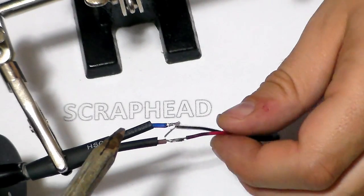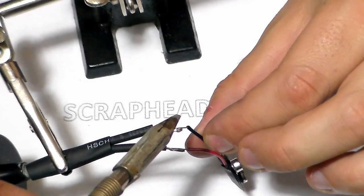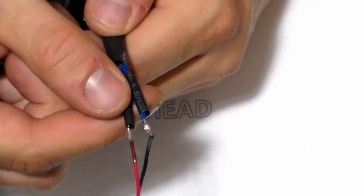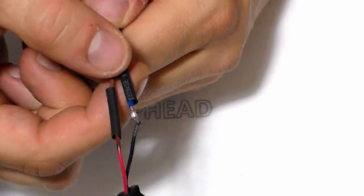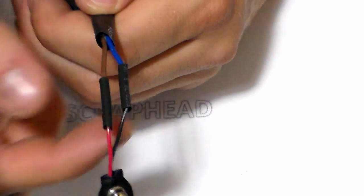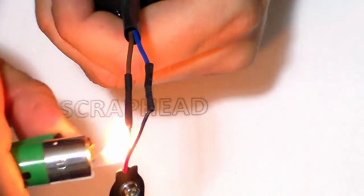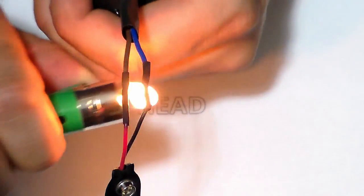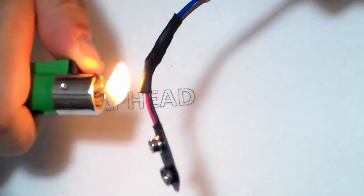And don't forget to put some shrinking tube on the cable before. Then put the shrinking tubes over the soldered connections and heat them up. Finally the big shrinking tube over the small ones and that's it! It's done!